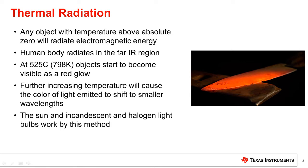As the temperature increases to around 525 Celsius, which is 798 Kelvin, the thermal emission will start to enter the visible region and appear to the human eye as a red glow in a process called incandescence.